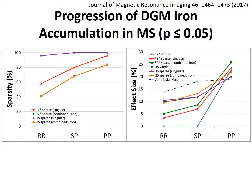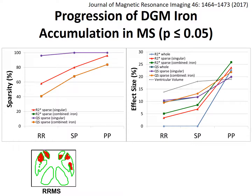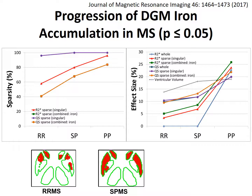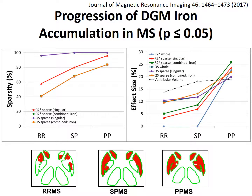The figure on the right shows the effect size of singular, combined, and whole structure analysis. All analysis methods demonstrate a progressive increase in effect size with advanced MS phenotypes. However, the combined sparse and singular sparse quantitative susceptibility analysis demonstrated the highest effect sizes compared to other methods. We also observed a progressive increase in effect size of ventricular volume with advanced MS phenotypes. Shown at the bottom is a visual illustration using the iron map of the relapsing remitting MS group, where the red region indicates identified iron accumulation. This region increased for the secondary progressive MS group, and further increased for the primary progressive MS group.